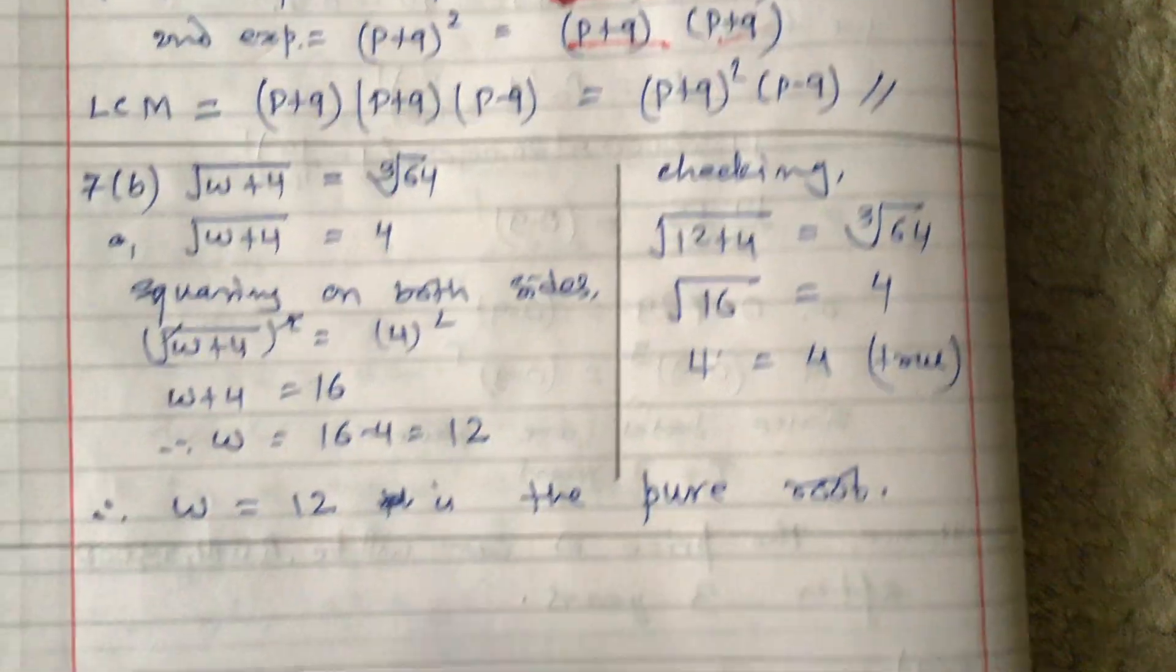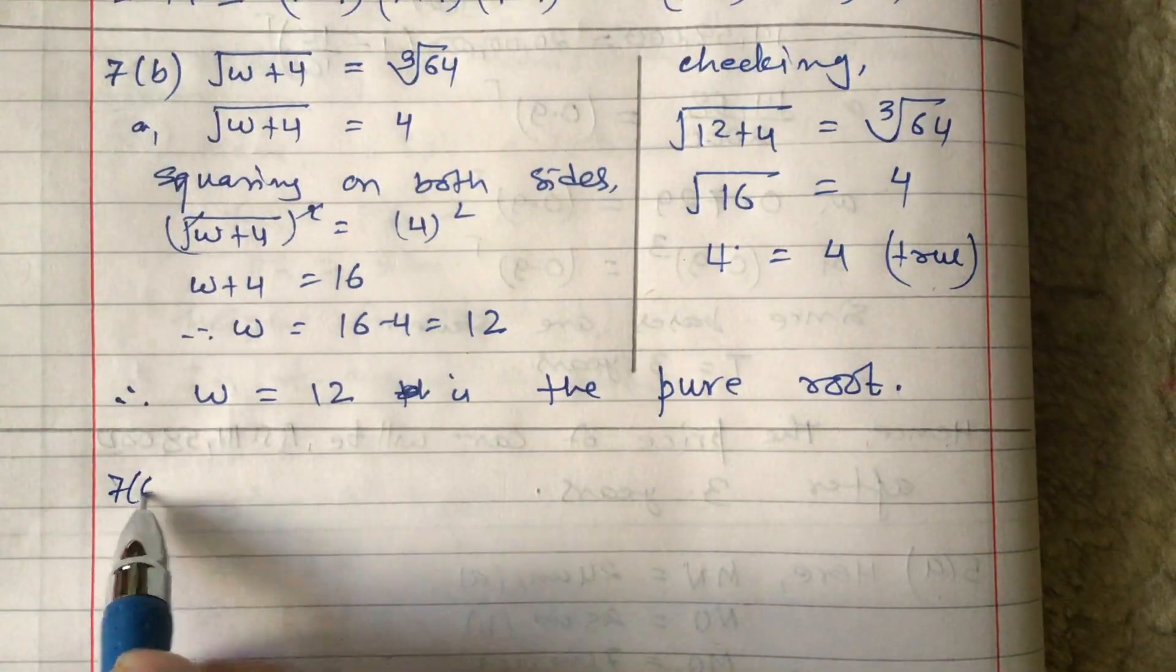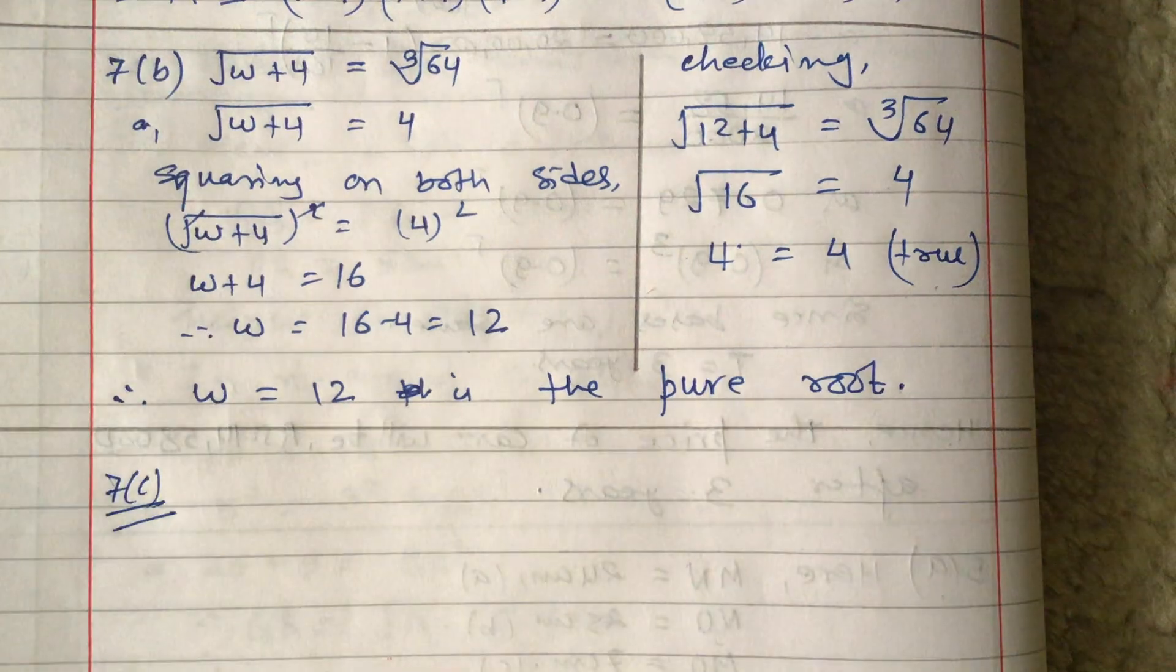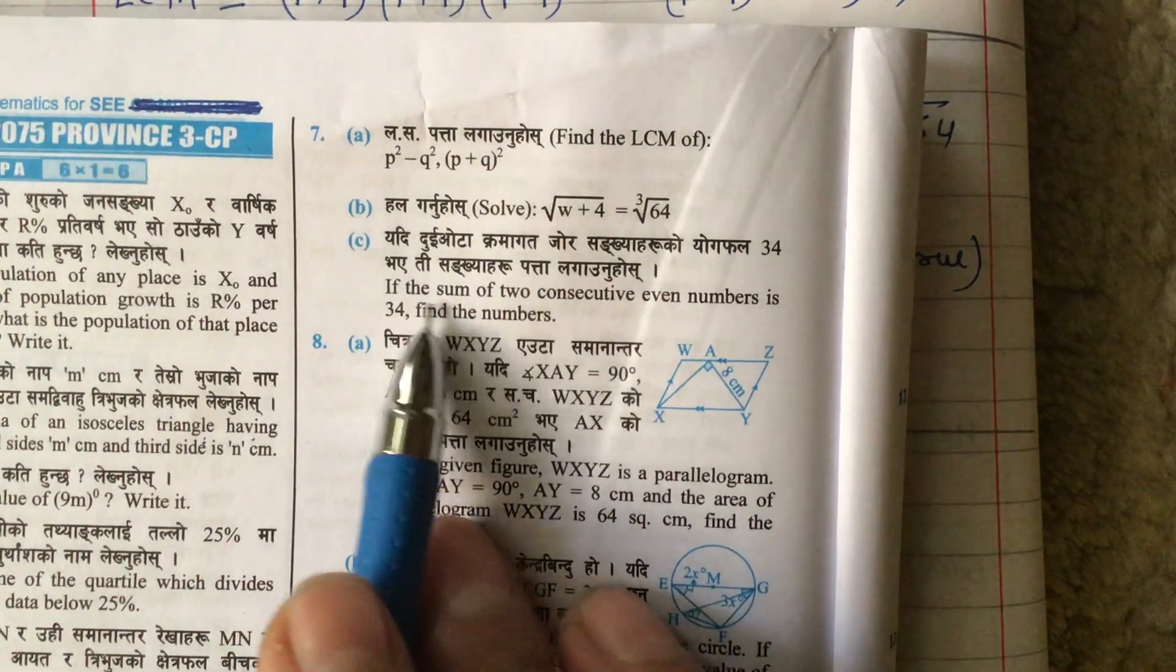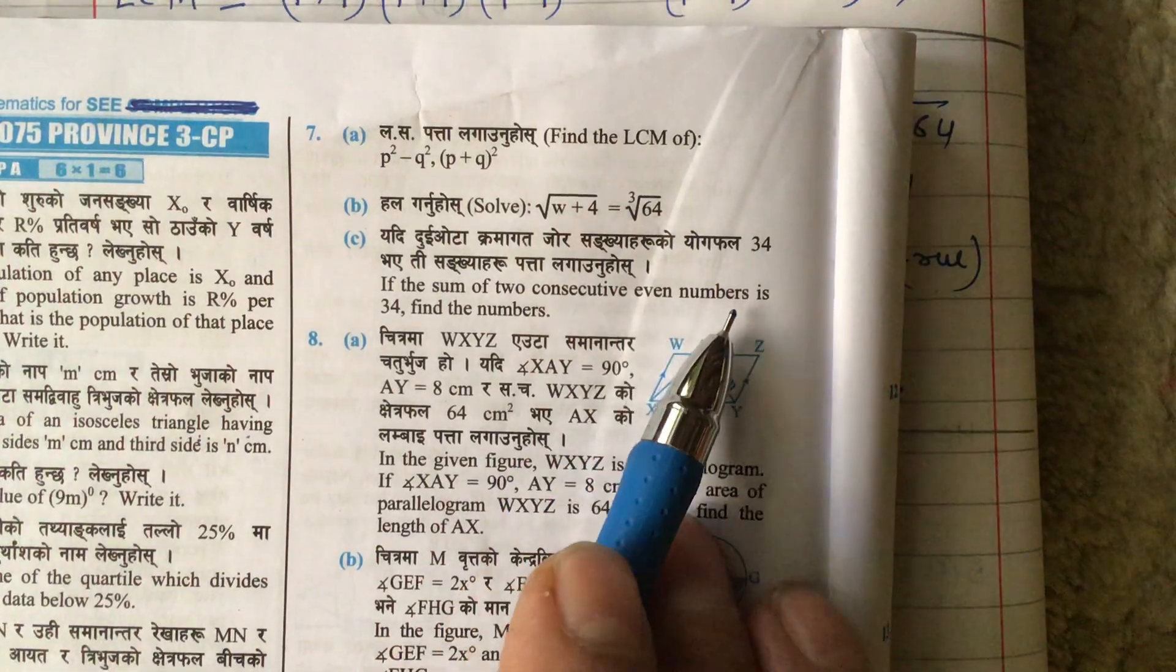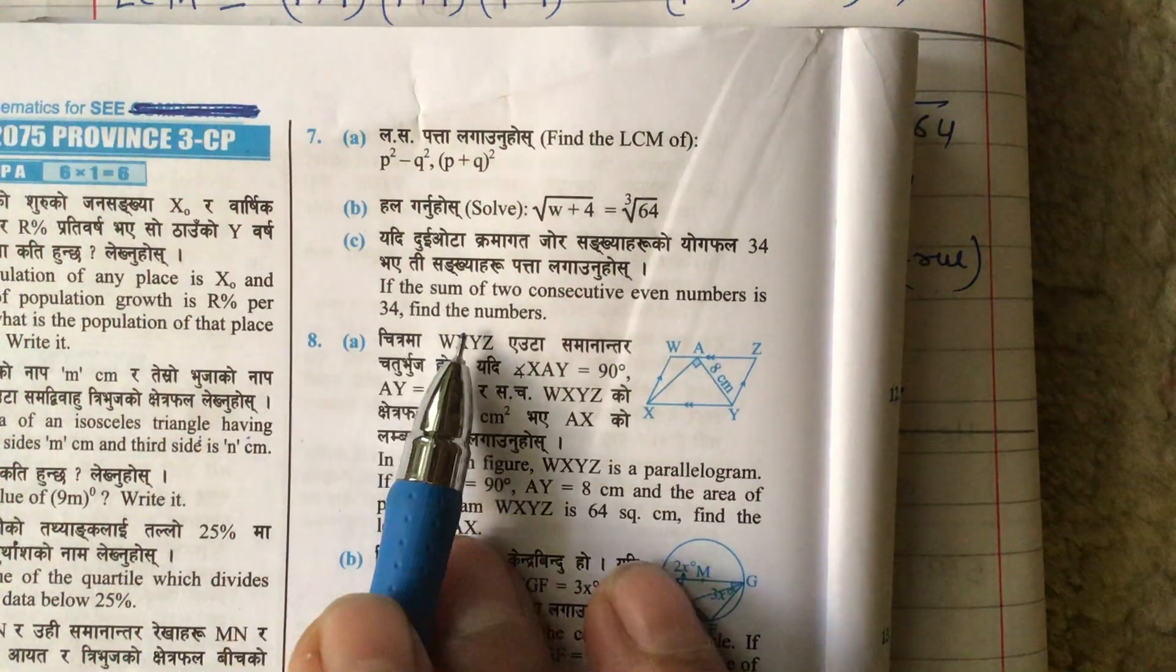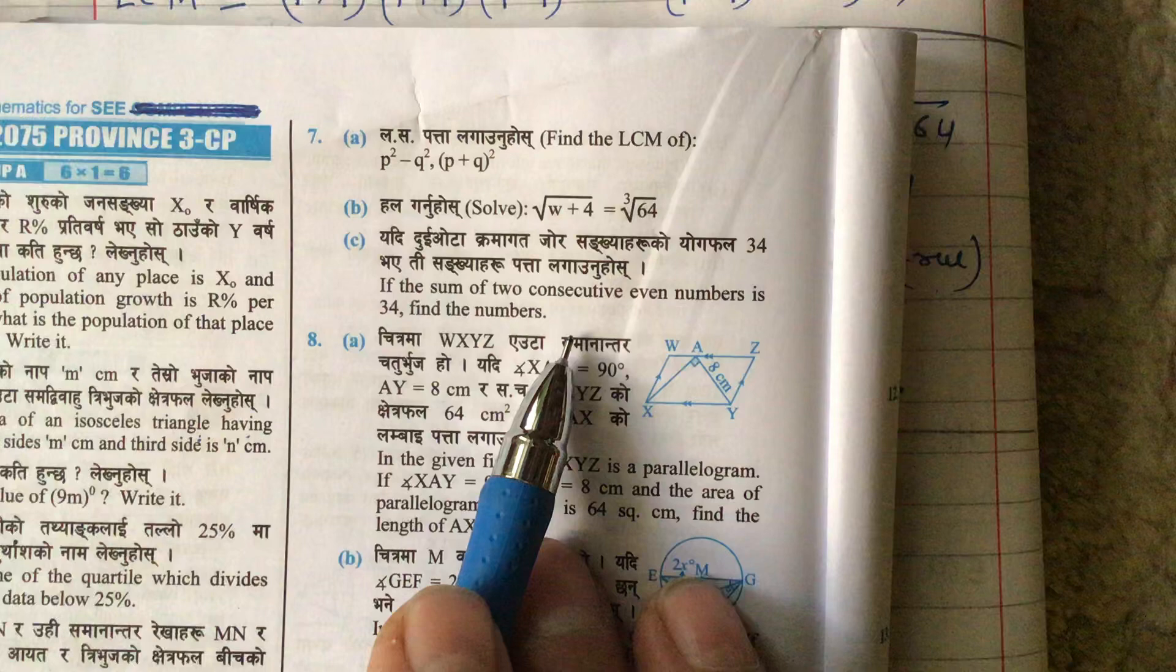Now we will start with question number 7c. The question is: if the sum of two consecutive even numbers is 34, find the numbers.